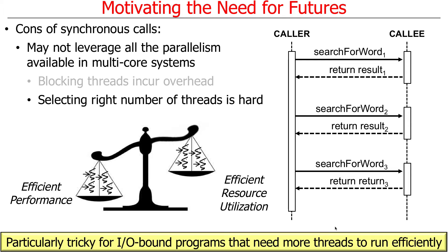In an I/O-bound system, if a thread is blocked and you don't have many other threads, you could run out of threads entirely. Even though there's work to be done, all your threads are blocked waiting for operations to finish, so nothing is making progress. Figuring out how many threads you need is hard, and it's particularly hard with I/O-bound programs.